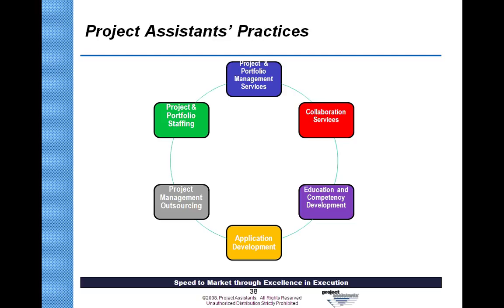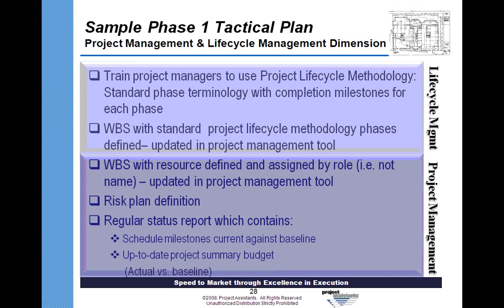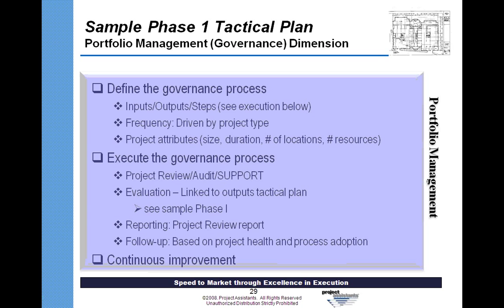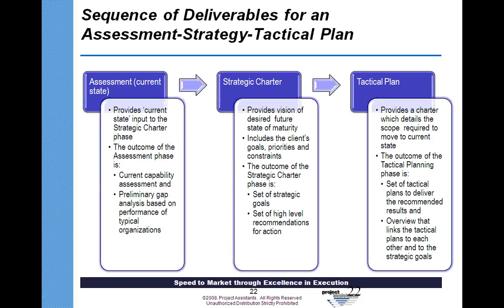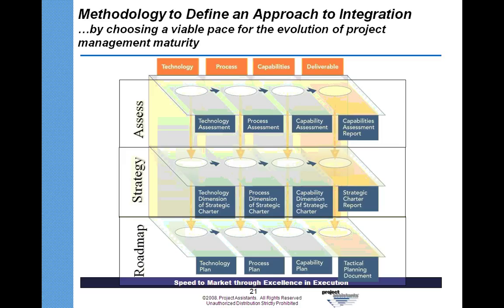The tactical plan directly addresses the sequencing of the maturation process. The question of what to do first, second, and third is predicated on having an assessment, a strategic charter, and a tactical plan that define the sequence of activities. An important note: the purpose of the strategy and tactical plan is to directly address the sequence of the original maturation process, defining the order in which activities occur.